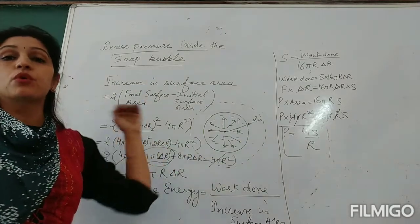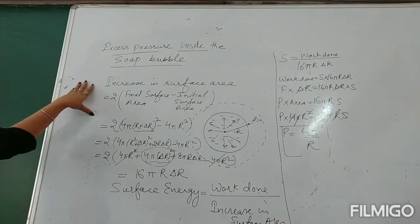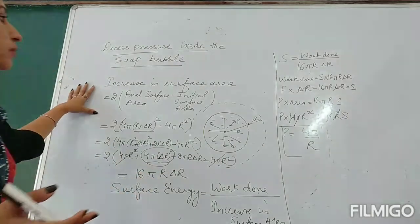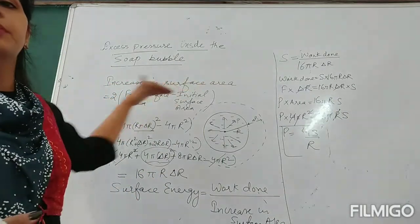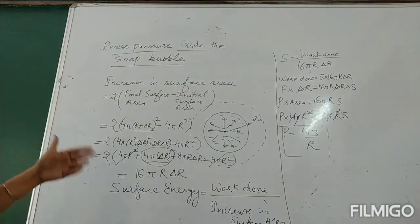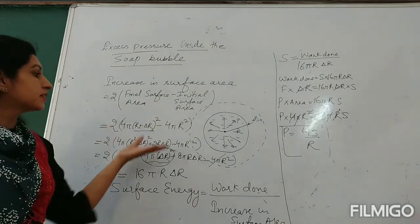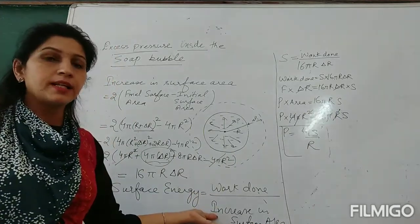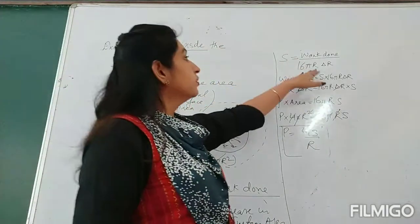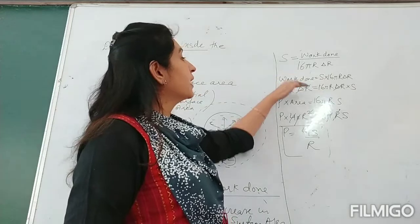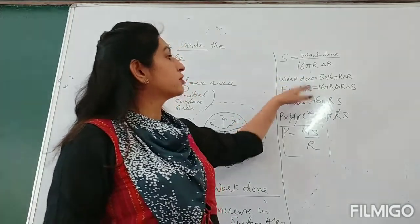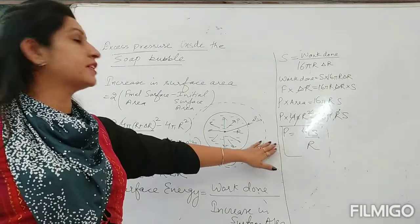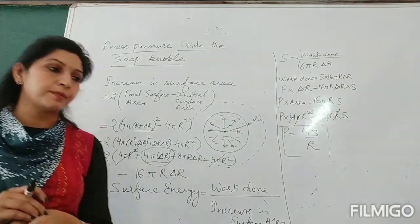To summarize for the soap bubble: a soap bubble has 2 free surfaces because it has air inside as well as outside. So its increase in surface area is double, giving 16πR·δr. Using surface energy equals work done over increase in surface area, and work done equals force times distance, we get excess pressure inside the soap bubble as 4S/R.